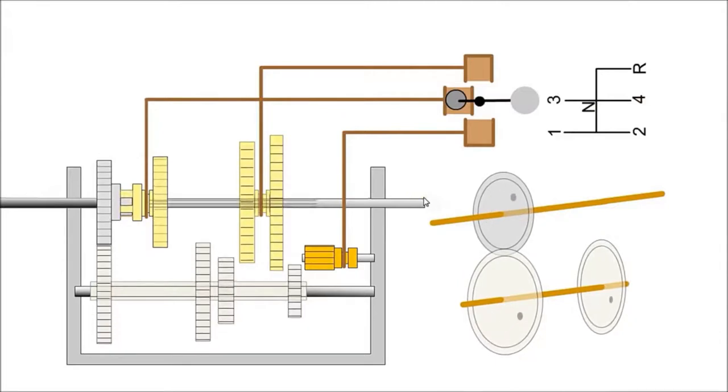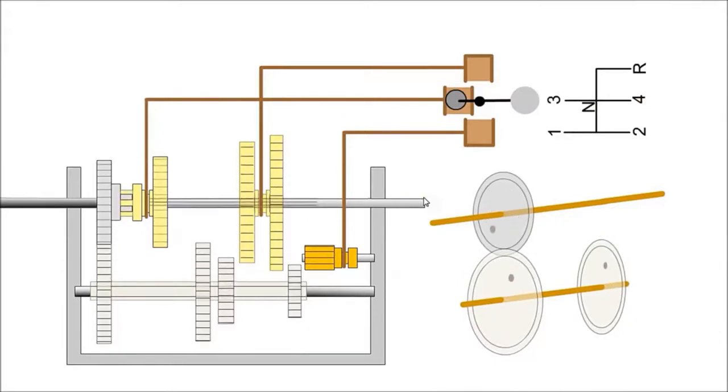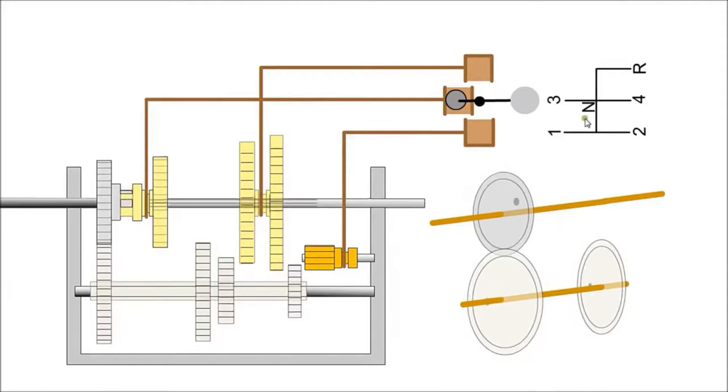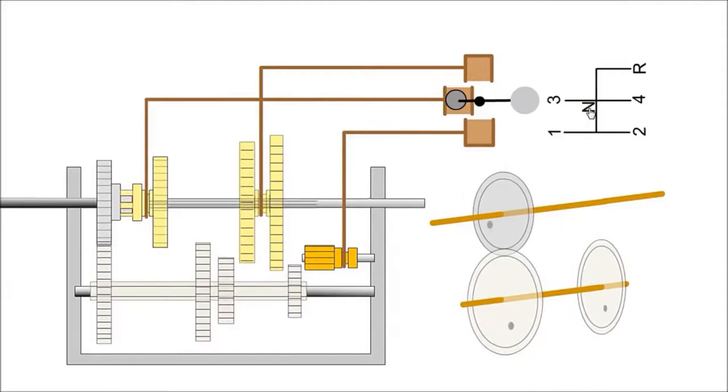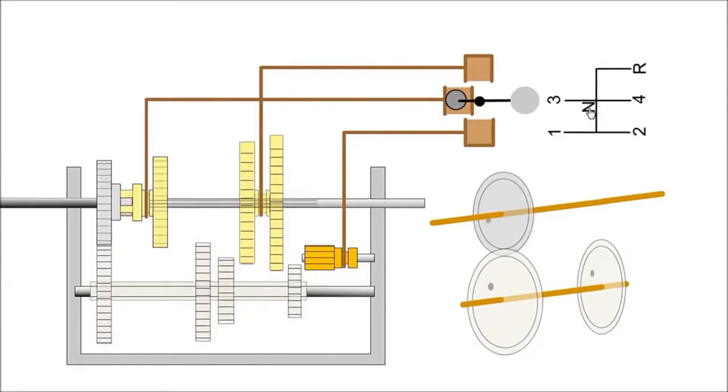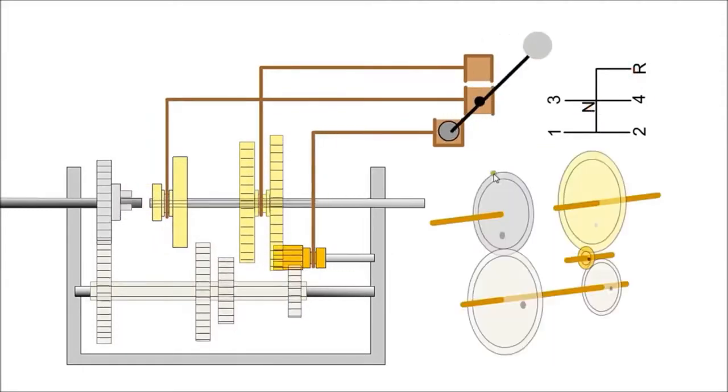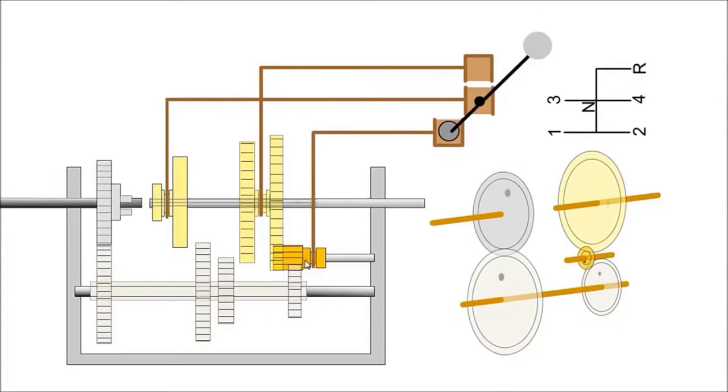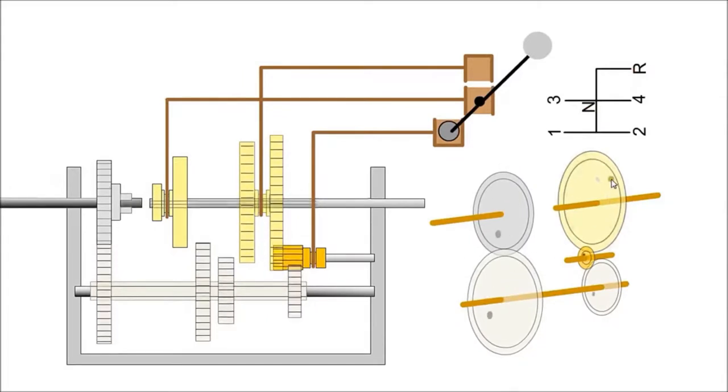Some cars have an overdrive, which means the output shaft is rotating faster than the crankshaft. This is sometimes used for fifth and sixth gear. For reverse, an additional pinion is inserted to provide rotation in the opposite direction.